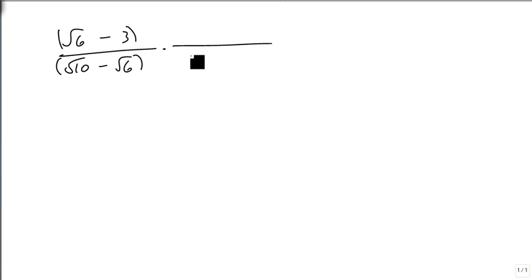Because in order to rationalize this, we need to multiply by the conjugate. So the conjugate is the same numbers, opposite sign. Same numbers, opposite sign. And so on top, we just multiply this through.